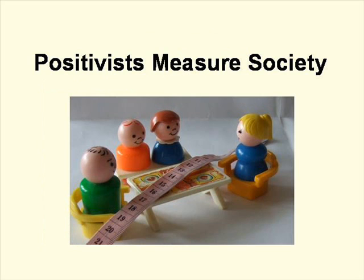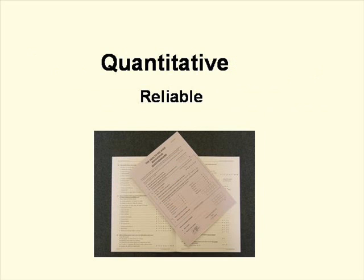The first group, the positivists, believe society is outside the individual and they seek to measure it. These researchers try to use the methods of science, adapting experimentation from laboratory to society in the form of field experiments and adopting the use of statistics from mathematics. The main methods here are social surveys — large-scale studies which generate numerical data, a measure of society. The statistics generated can be compared to see the influence of, for example, gender on academic achievement. These are called quantitative methods and they are reliable or replicable.